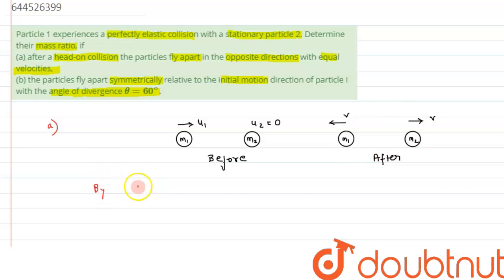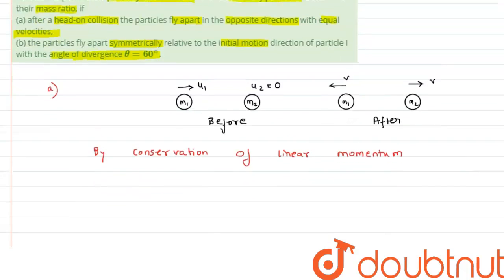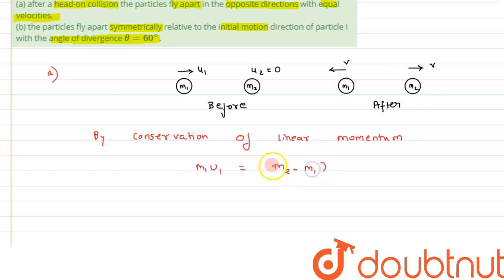By conservation of momentum, as there is no external force along the x-direction, we can write: m1*u1 equals the momentum after collision. After collision, both velocities are in opposite directions, so we write it as (m2 minus m1) times v. Let's call this equation number one.